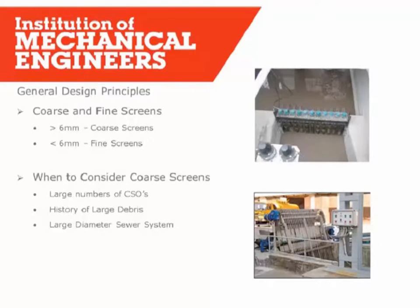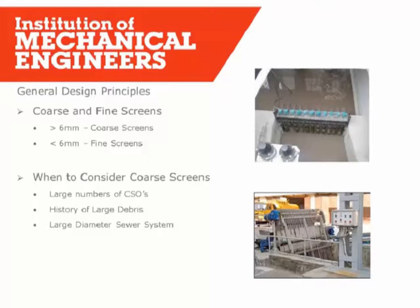On to general design principles. There are two main types of screen: coarse and fine. We define coarse screens as those with an aperture greater than six millimeters, and fine screens as those with less than six millimeters in two dimensions. Generally speaking, if you install coarse screens it's going to be more expensive - you're paying for more plant, a larger civil footprint, and increased maintenance. Consider coarse screens when your catchment has a large number of CSOs passing forward a lot of screenings to the fine screens - you may need coarse screens to protect them - or if you've got a large diameter sewer capable of passing large debris that could damage a fine screen.